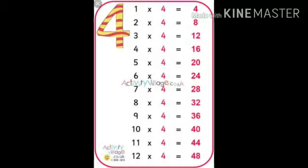Next one, four table. One fours are four. Two fours are eight. Three fours are twelve. Four fours are sixteen. Five fours are twenty. Six fours are twenty-four.